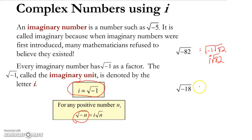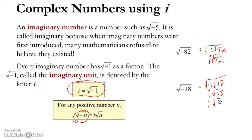The square root of minus 18 is going to be the square root of minus 1 times the square root of 18, which is the same thing as i times the square root of 18. And now we can simplify radical 18 as the square root of 9 times the square root of 2. The square root of 9 has a value of 3.